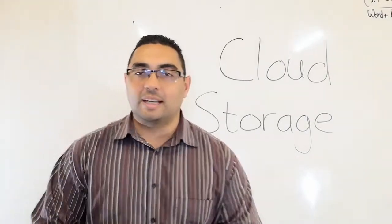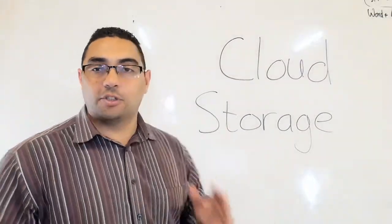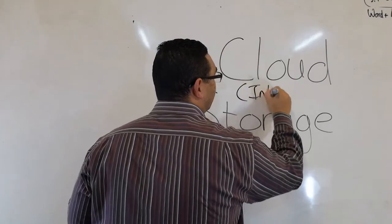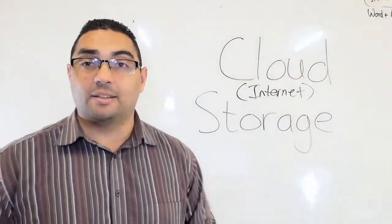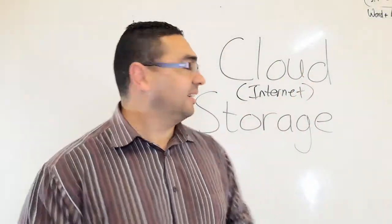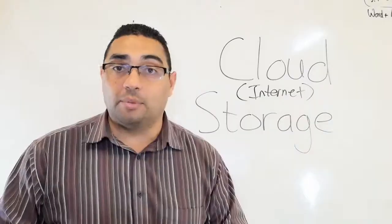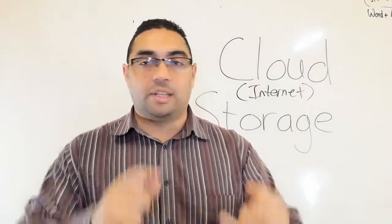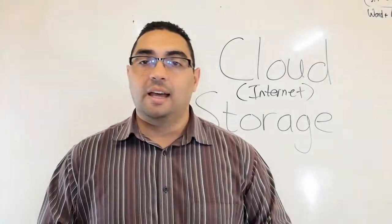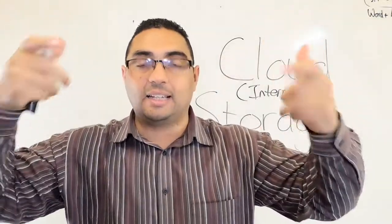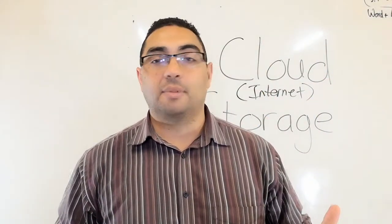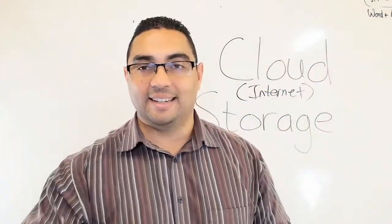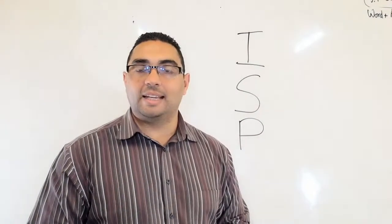Let's look at term number one: cloud storage. When we think of the cloud, you need to think of the internet. Basically what we're talking about is storing data on the internet — it's just another way of storing our data, whether it's files, pictures, videos, whatever it is. An example would be something like Dropbox or Google Drive, because all this information is on the internet.